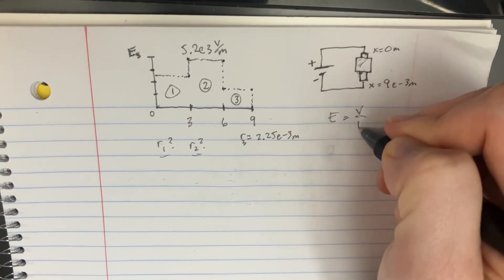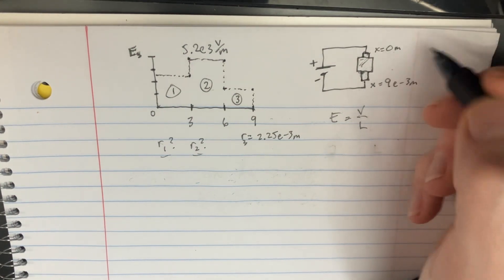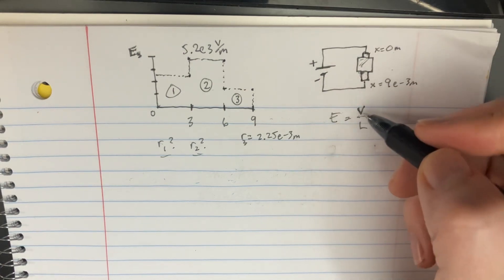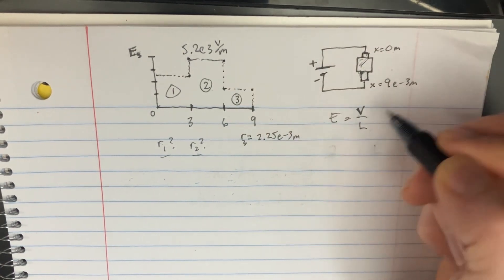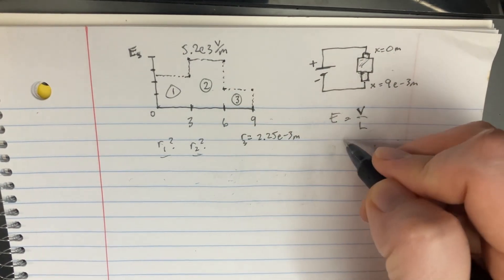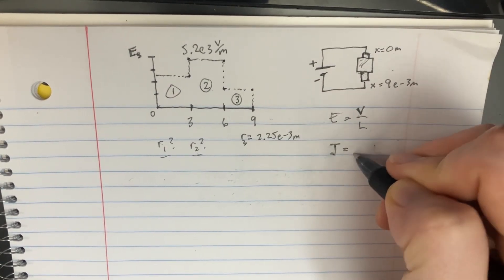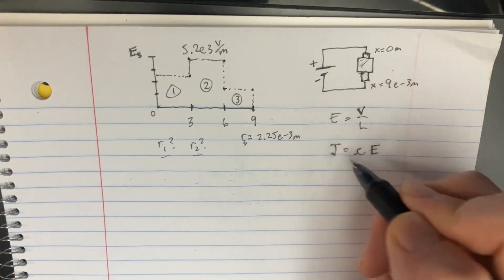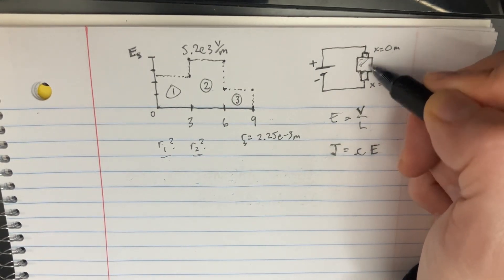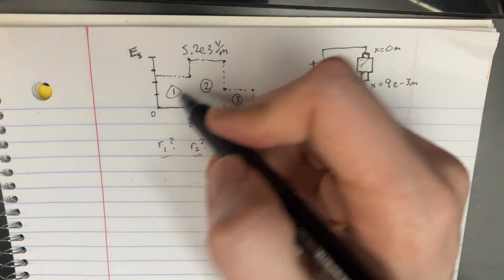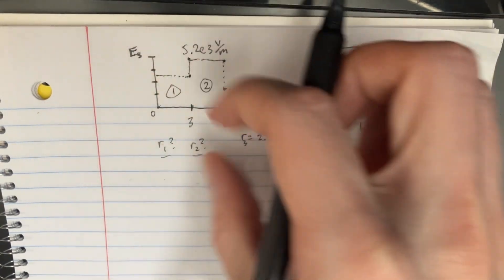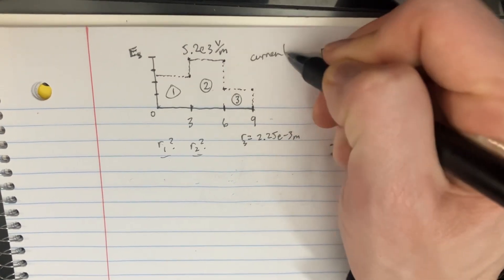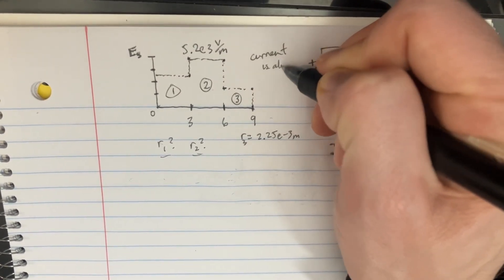One equation is E equals V over L. We kind of even know the length, but we don't know the voltage, so that won't help too much. We also know J equals conductivity times the electric field, which might help. One really important thing to remember is that no matter what the size of the radius or the shape of the wire, the current is always the same.